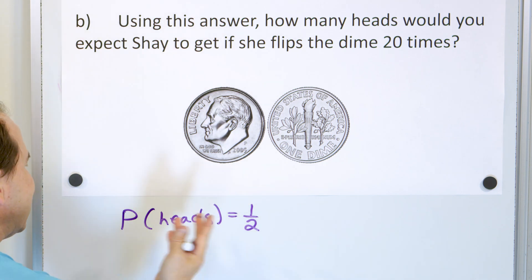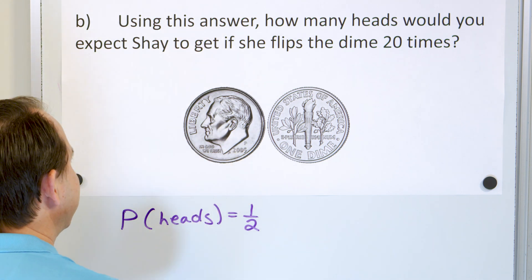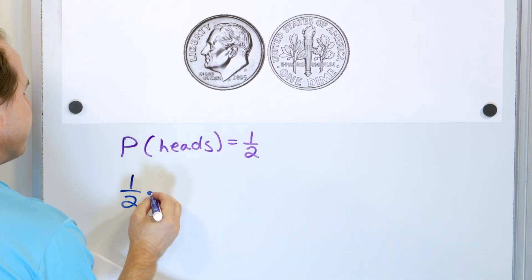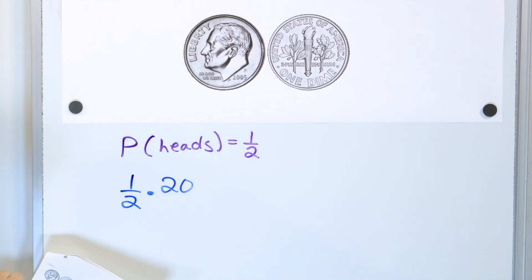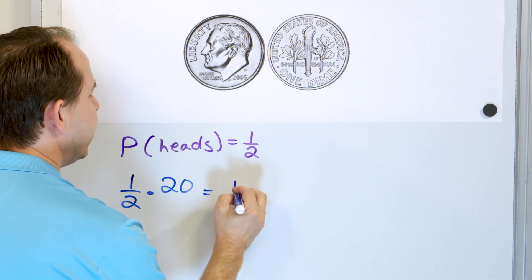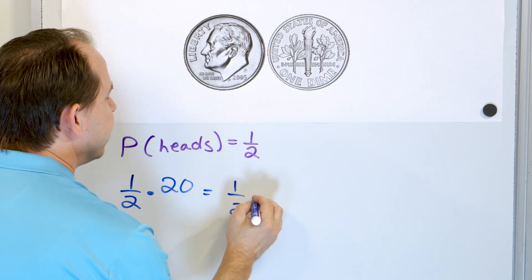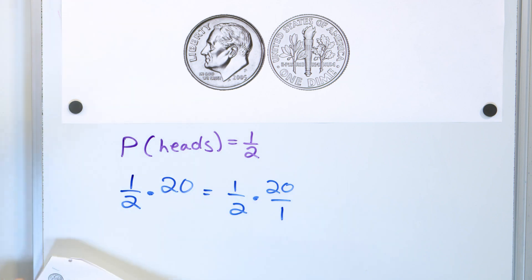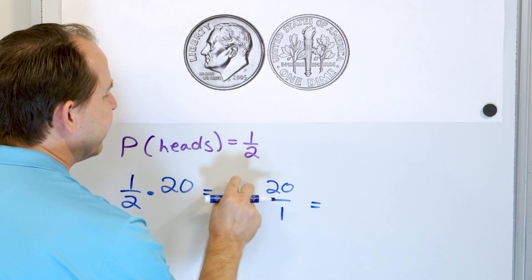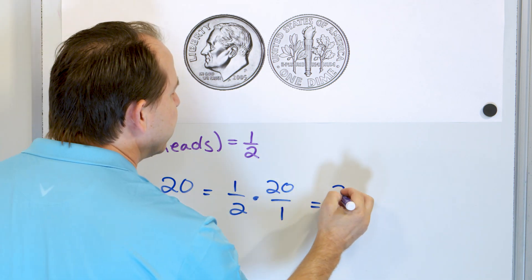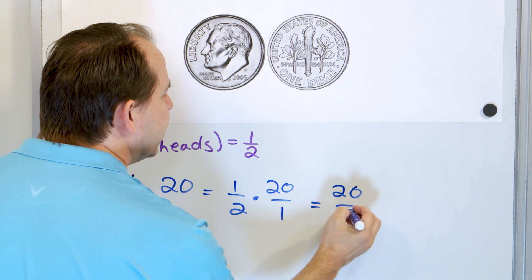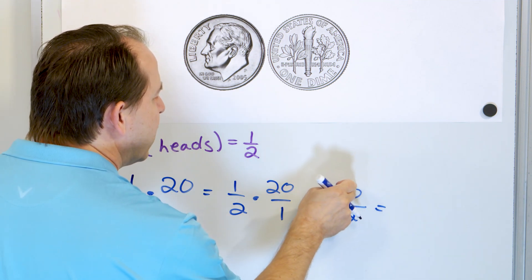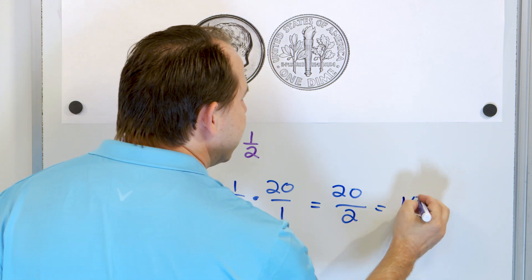So if we flip it 20 times, we calculate how many heads by taking the probability of heads and multiplying by the number of flips, which is 20. Writing 20 as 20 over 1, we multiply the fractions: 1 times 20 is 20, and 2 times 1 is 2. And 20 divided by 2 is 10.